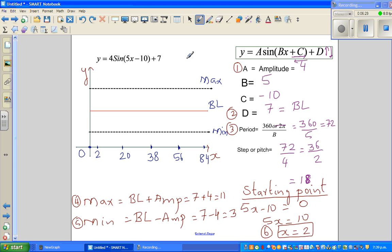So your sine graph starts, this is a positive sine graph. The sine graph starts at your baseline. Let me use a green color for plotting the points. So at 2, this is your starting point at your baseline. And then it goes to the maximum at 20. Then it hits the baseline at 38. Then reaches the minimum at 56. And comes back to the baseline at 84.